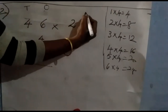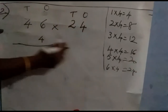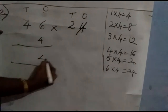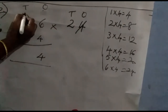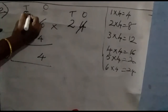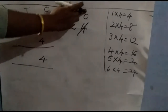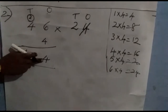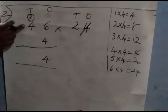Strike out the four and put four in the ones place and two in the tens place. We have finished multiplying the ones number. Next, move on to the tens digit.